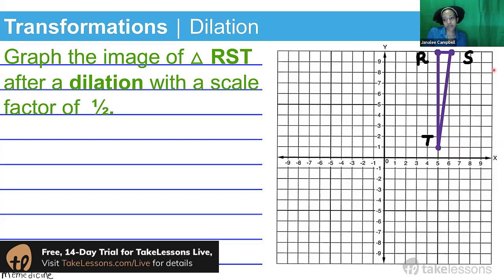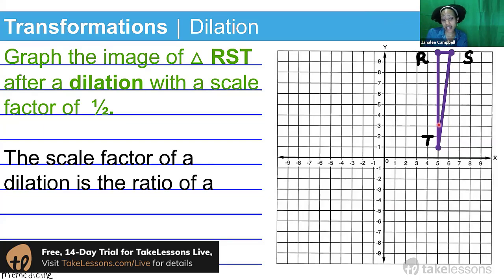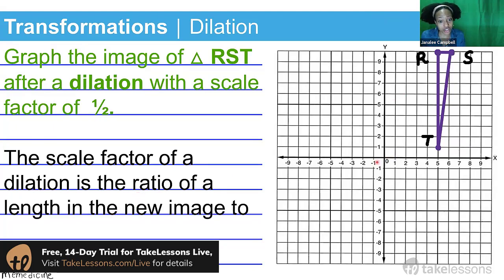Again, we're dealing with that same figure we previously saw in our rotation transformation. So the scale factor of a dilation is going to be the ratio. Whenever you see the word ratio, all you're forming is a fraction, or you're doing the mathematical operation of division. So it's a ratio of a length in the new image to the corresponding length in the original figure.